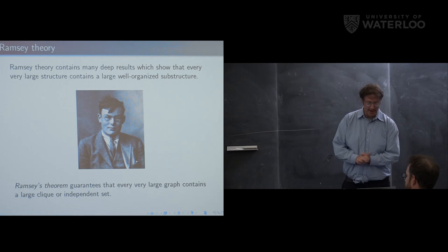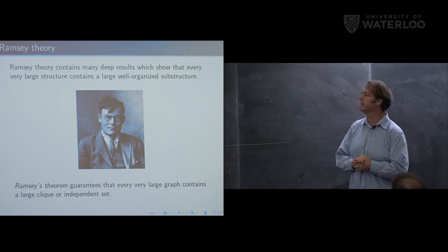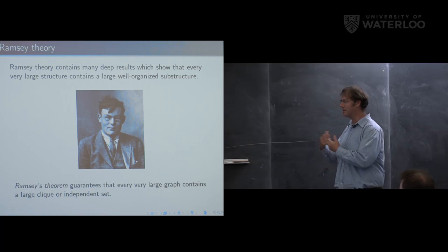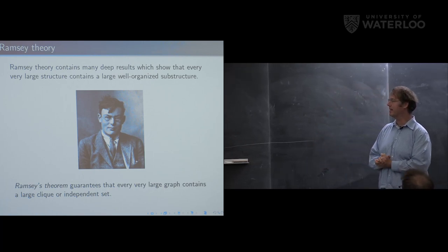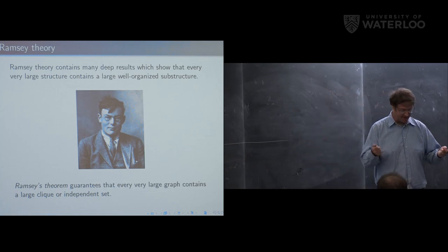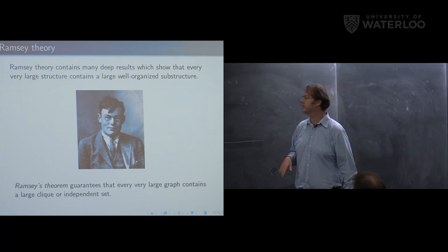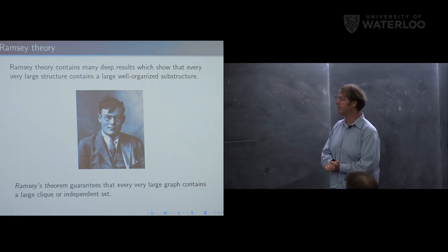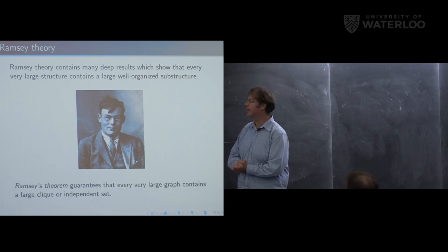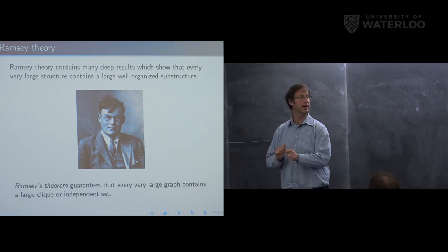Ramsey theory is an area of math that contains many deep results showing that every very large structure contains a large well-organized substructure. The quintessential result is Ramsey's theorem, which guarantees that every very large graph contains a large clique or independent set. A clique is a set of vertices where every pair is adjacent, and an independent set is a set of vertices with no edges between them.